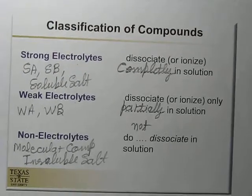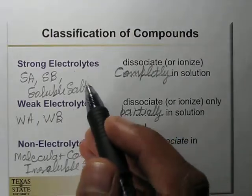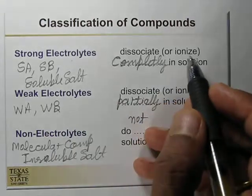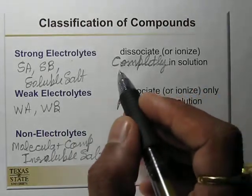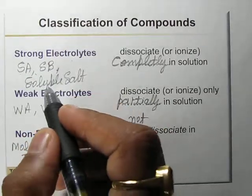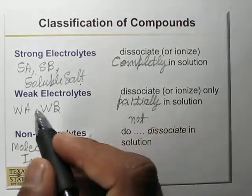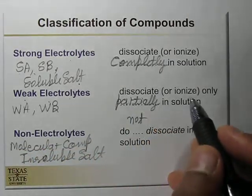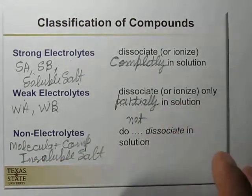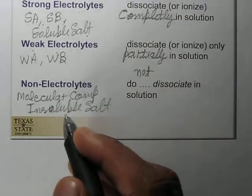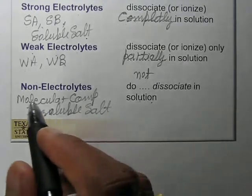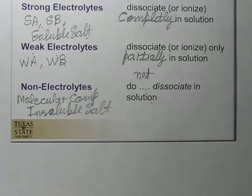To summarize the classification of compounds: strong electrolytes completely ionize (100%) in solution — examples are strong acids, strong bases, and soluble salts. Weak electrolytes only partially ionize — examples are weak acids and weak bases. Non-electrolytes do not dissociate at all — examples are molecular compounds and insoluble salts.